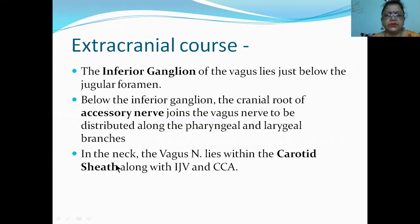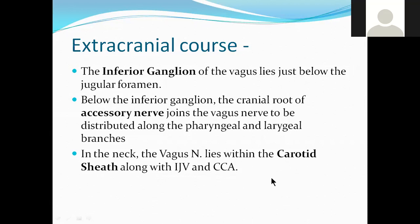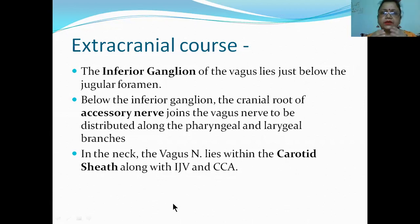In the neck, the vagus nerve lies within the carotid sheath along with the internal jugular vein and common carotid artery. Both the vein and artery will be in front, and the vagus nerve will be exactly behind in the middle. The carotid sheath is very, very important.